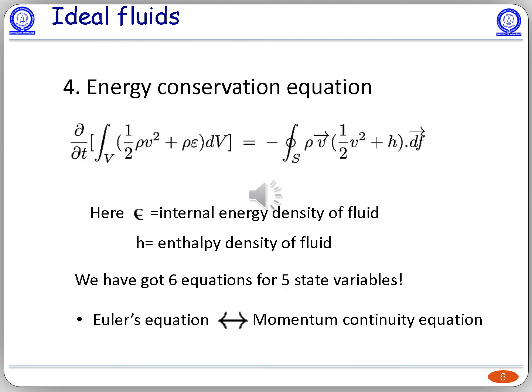Similarly, one can write the energy conservation equation in terms of the continuity equation. The left-hand side is the rate of change of kinetic energy plus internal energy of molecules inside any volume. The right-hand side is the kinetic energy plus internal energy current, plus the current of pressure work on the fluid, flowing out normal to the enclosing surface integrated over the volume per unit time. While writing these equations we have six equations for five state variables, but in principle we can obtain Euler's equation from the momentum continuity equation. Therefore, we have in total five independent equations for ideal fluids.